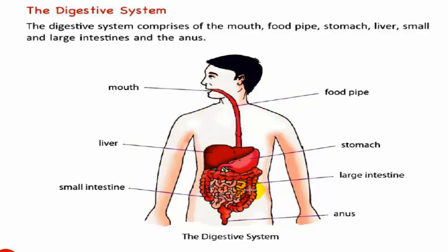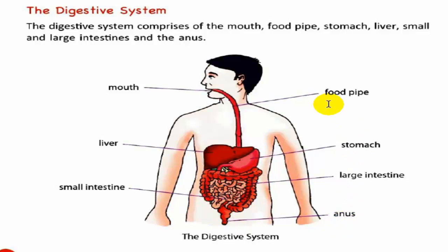The outermost part is the large intestine. And the last one is the anus. This is the digestive system.